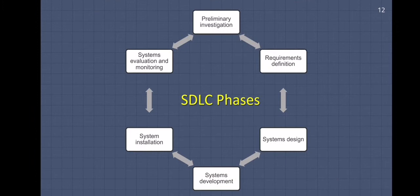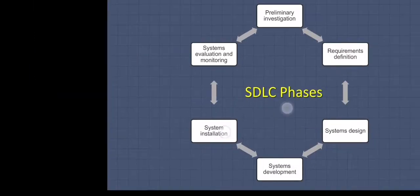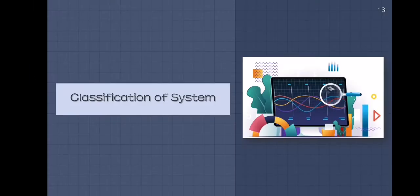We now go to the different classifications of systems. We identified three classifications: physical or abstract system, open closed system.